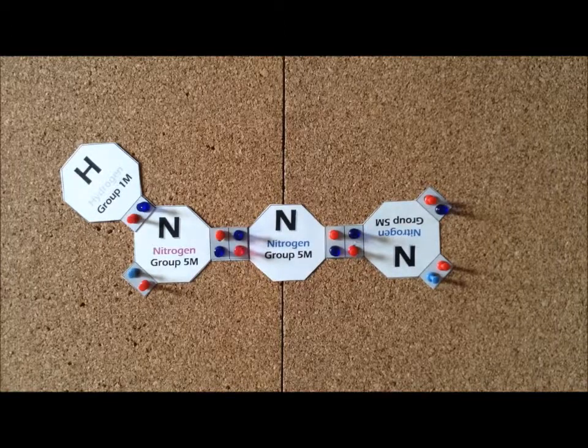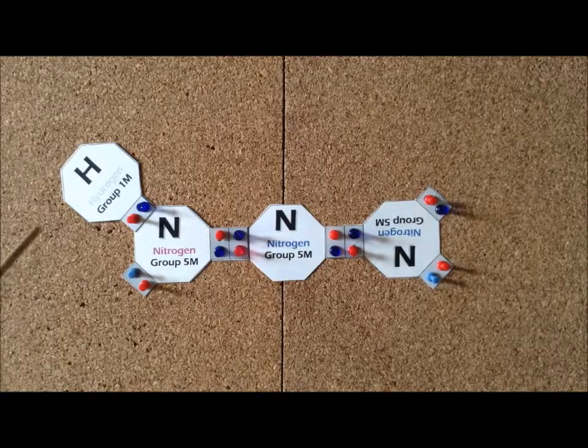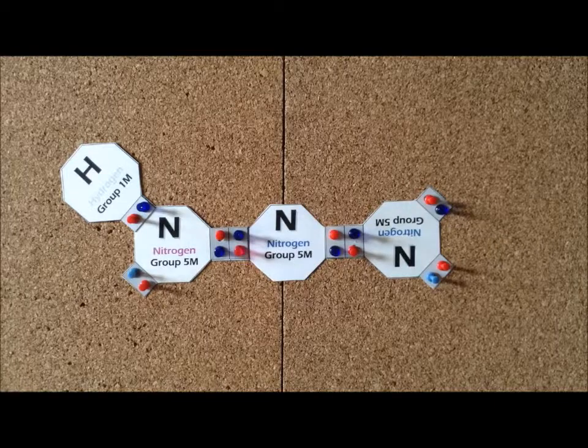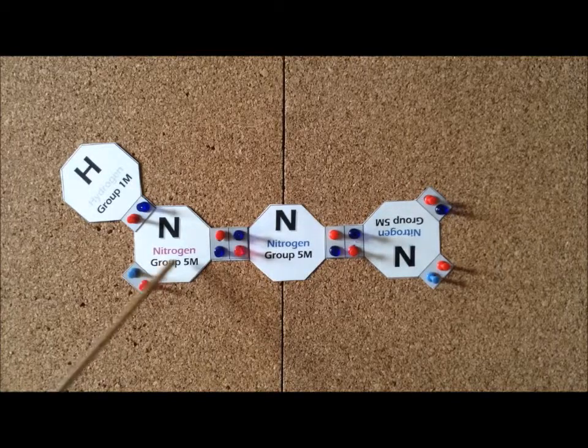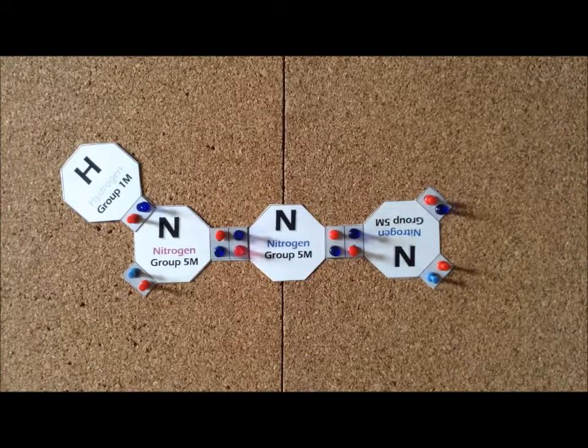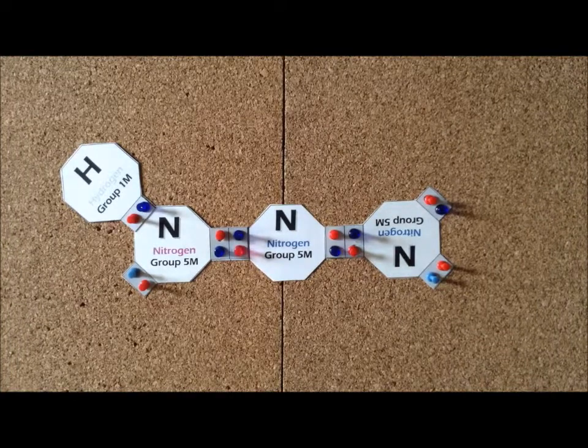One of the ways that we can satisfy the duet rule for hydrogen and the octet rule for nitrogen is to link the 3 nitrogen atoms in a line, in a linear form, bound together by double bonds.